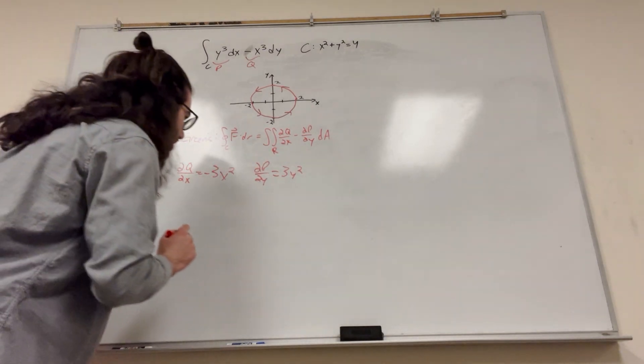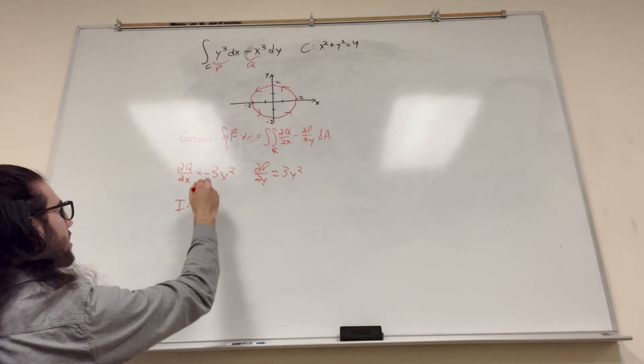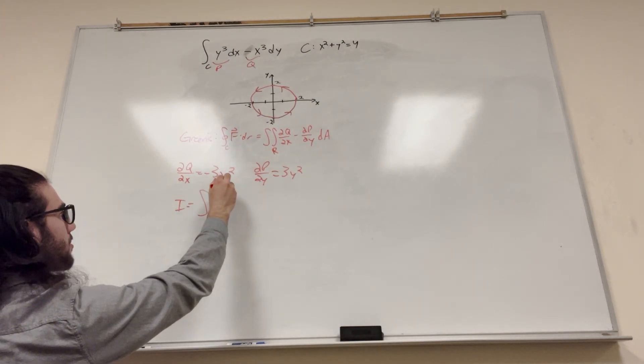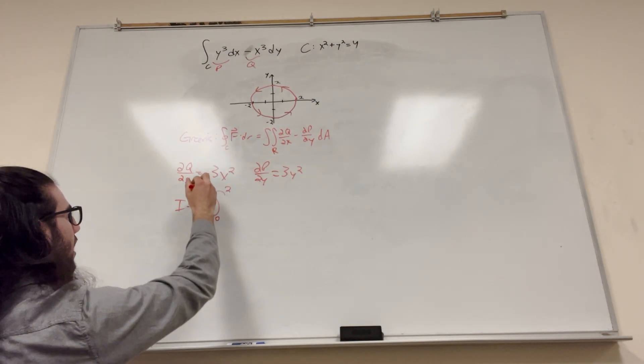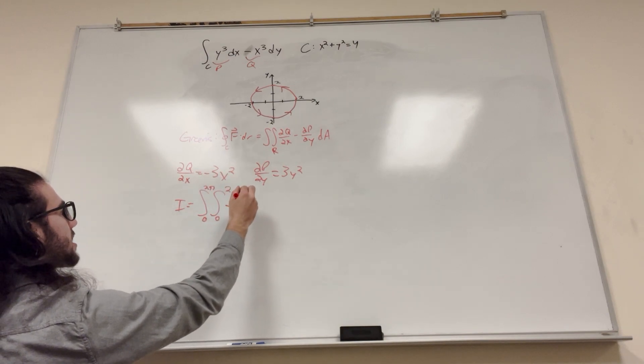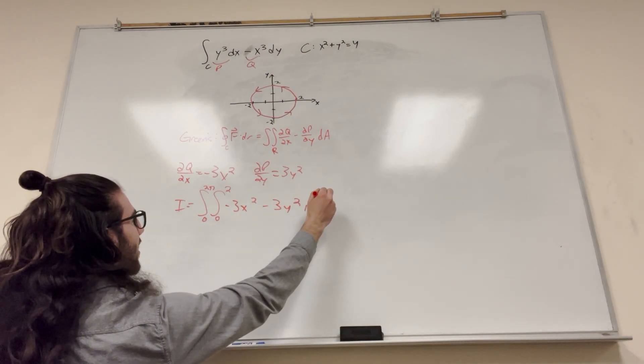Let's go ahead and put it into an integral. So we're going to use polar on this, obviously. It's going to be the double integral. Our radius goes from 0 to 2, and we go full circle around, so 0 to 2π. And then it's going to be negative 3x squared minus 3y squared r dr dθ.